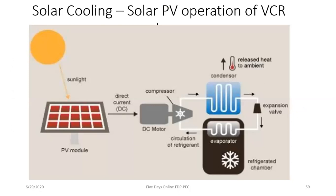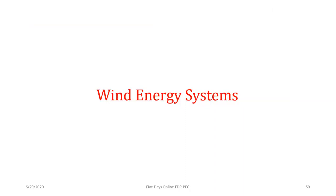Another solar application is solar cooling: solar PV panels can power vapor compression refrigeration systems — air conditioners and refrigerators — by using a DC compressor or intelligent inverters. This avoids using conventional grid electricity for cooling spaces.